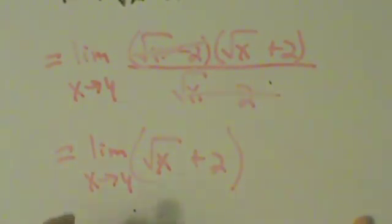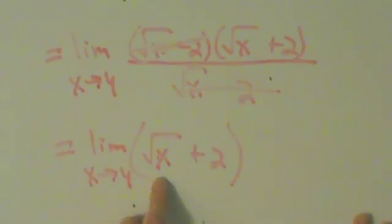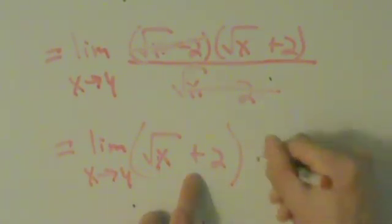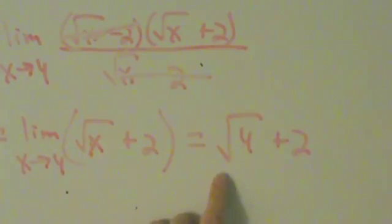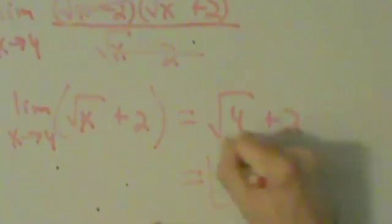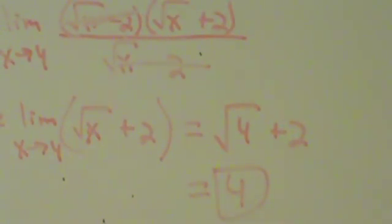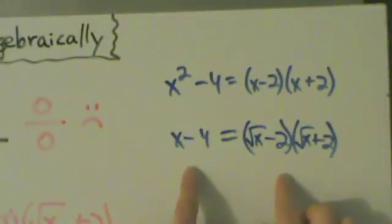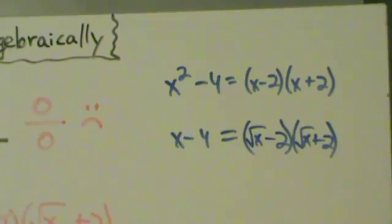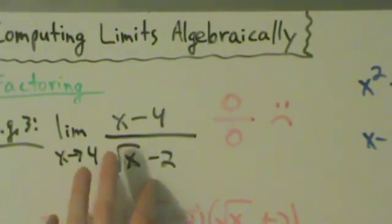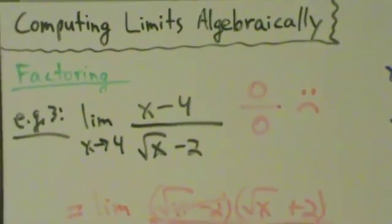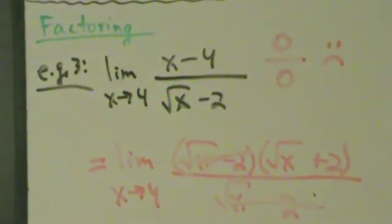Now we can do direct substitution. Substituting x equals 4 gives square root of 4 plus 2, which is 2 plus 2, equals 4. So 4 is our final answer for example 3. Now if you don't like this factoring method, there is another way to do this kind of problem, and we'll come back to this example in a later video. But for now, factoring works, so if you prefer that method, that's totally fine.